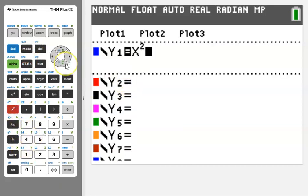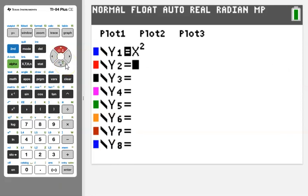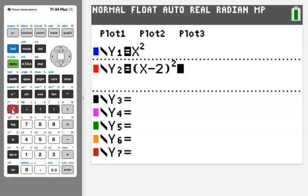Using the down arrow, let's go to y2 and put in our second function, which is our f of x. Open parentheses, x minus 2, close parentheses, raised to the 2nd power or squared, and then minus 1.